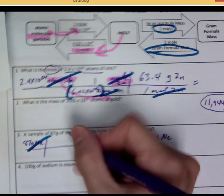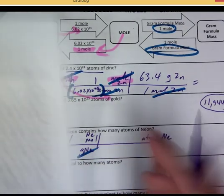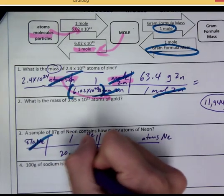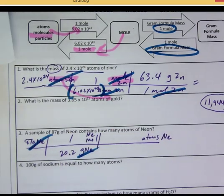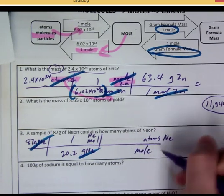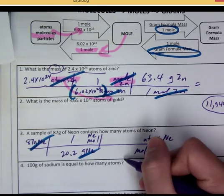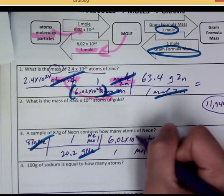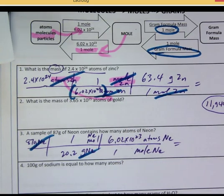One more of Neon is what mass? Grams, periodic table. 20.2. 20.2. All right? And then one mole of Neon will go down here. What do we mean about mole and atoms? One mole is 6.02 times 10 to the 23rd atoms. So that's that.